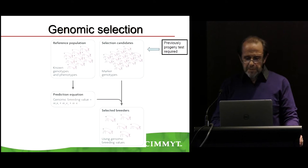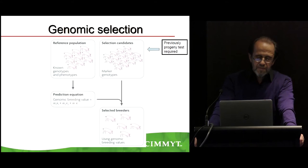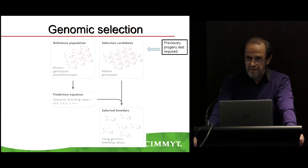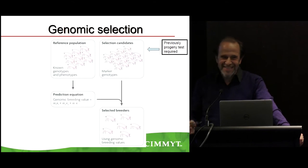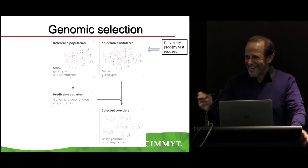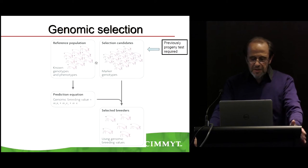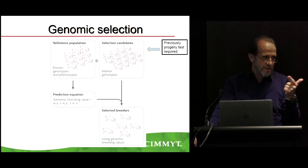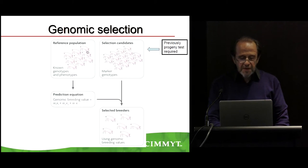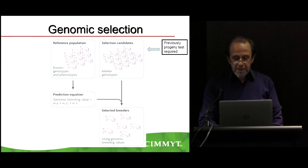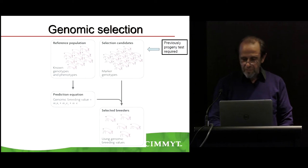You have the reference population — I put animals because I borrowed this slide from John Hickey, an animal breeder. The reference population has genotypes, markers, and phenotypes — things that you have seen, like the weight of these animals or the grain yield of plants. Then you have the selection candidates that have only markers and genotypes, no phenotypes.